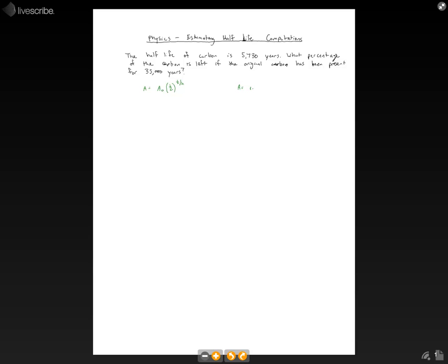a is the remaining carbon, a₀ is our original carbon or initial amount, t is the time that has passed, and h is our half-life.